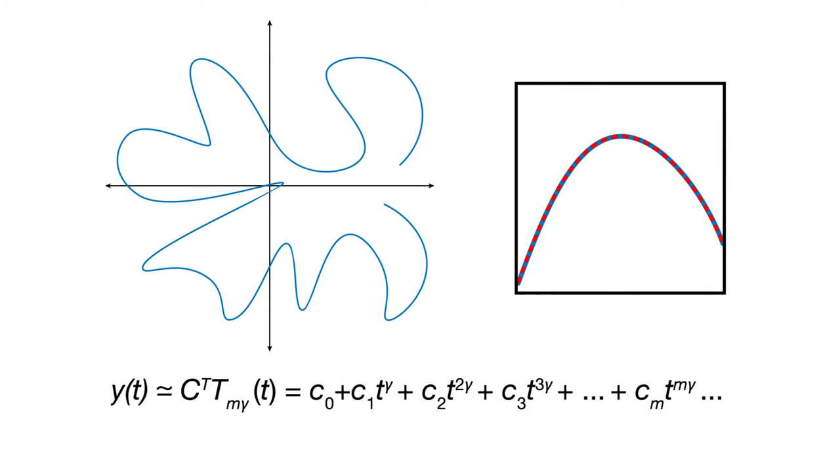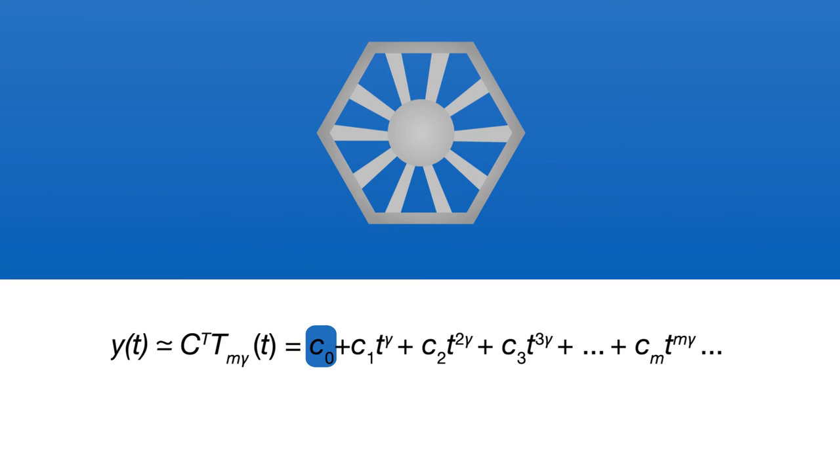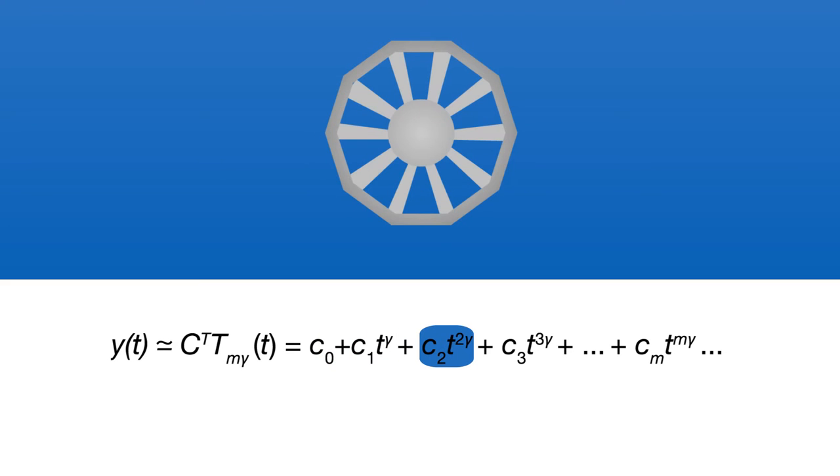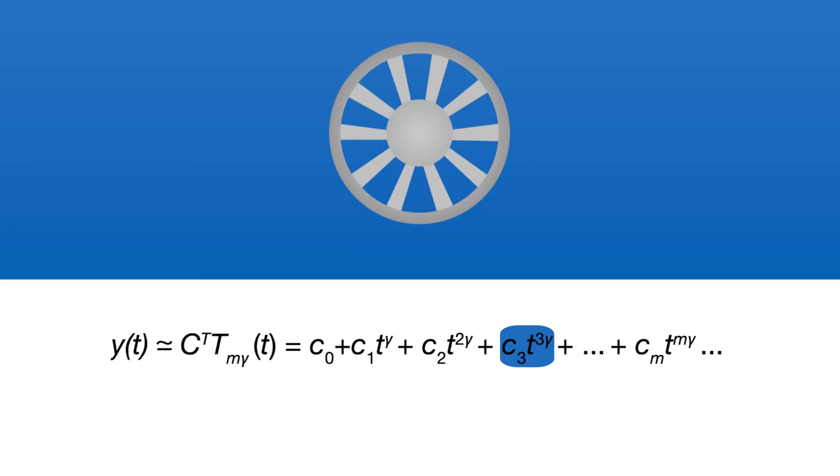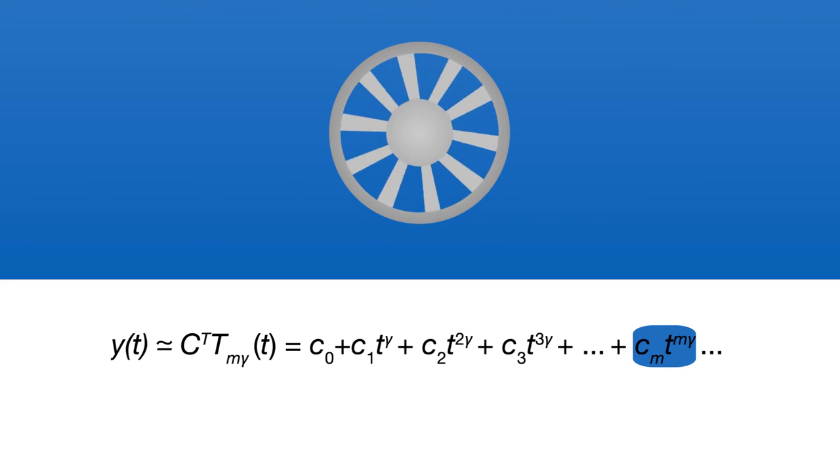That makes each calculation easier. And because each term in this so-called fractional Taylor series is slightly more complex than the last, the estimate gradually draws nearer to the exact function. A handful of terms usually does the trick.